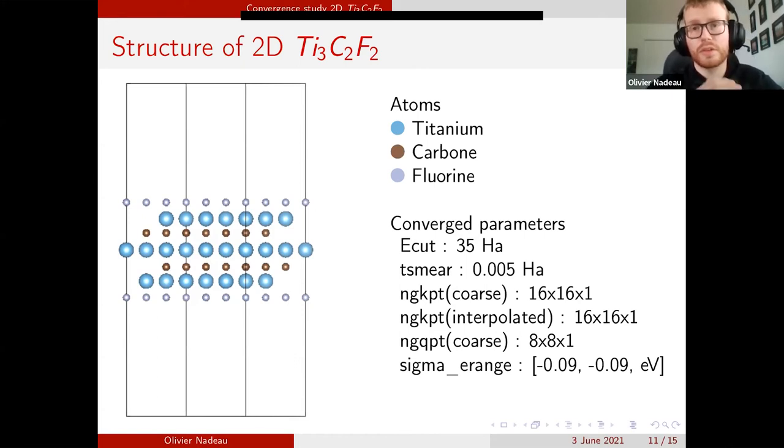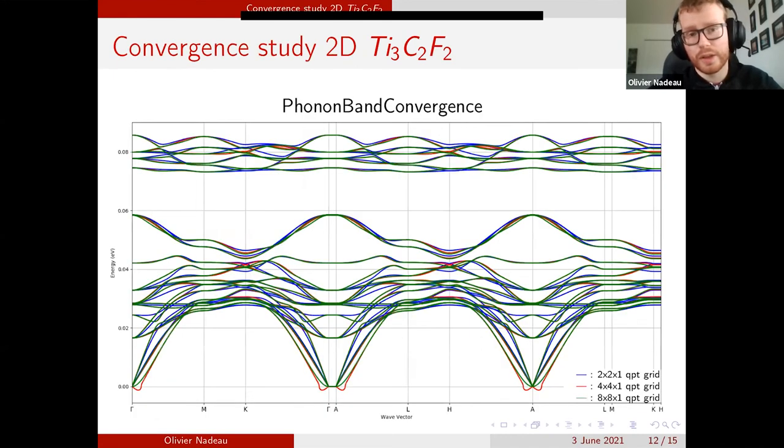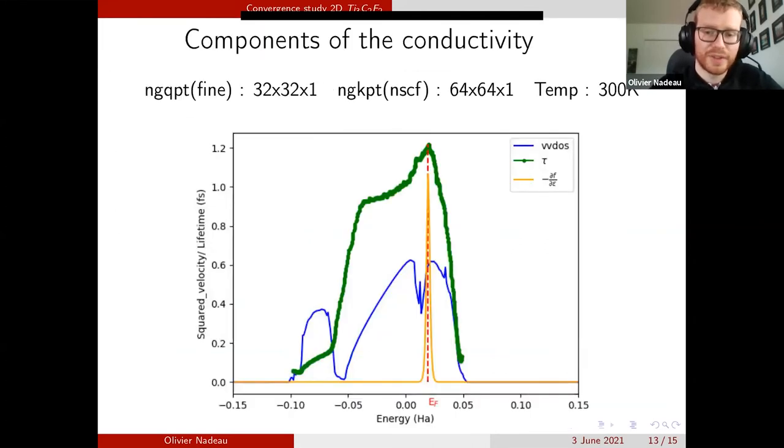Why did we use a value of 0.09 eV? This is because we only need to consider the energy of phonons around the Fermi level, and in our case, when we look at the phonon band, we see that the highest energy is 0.09 eV for phonons.